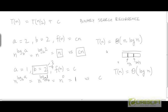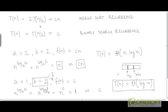Since n^(log_b a) has the same rate of growth as f(n) = c, the solution to the recurrence remains T(n) = Θ(log n). In a similar way, we could think of dividing the array in merge sort not into two sub-arrays but into three — sorting each recursively and merging — which is the recurrence T(n) = 3T(n/3) + cn we saw when discussing the recursion tree method, and the complexity remained unchanged.